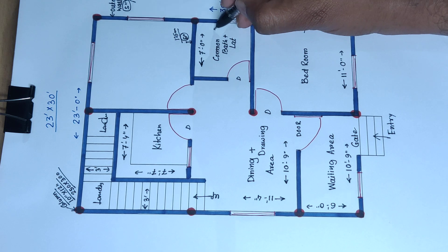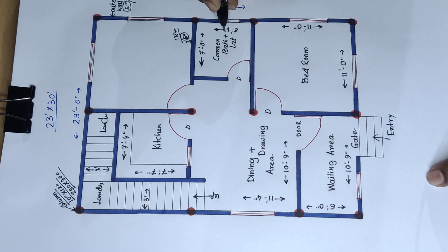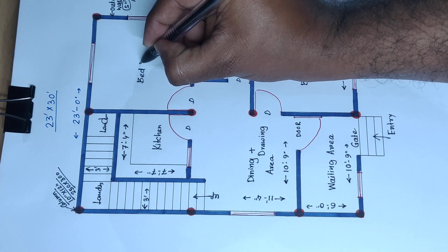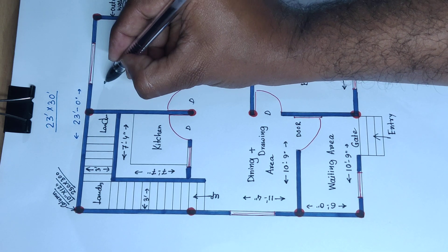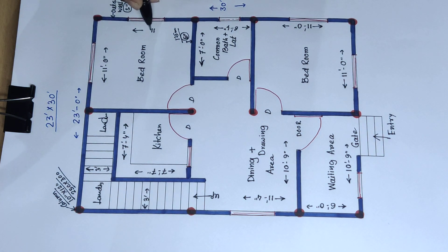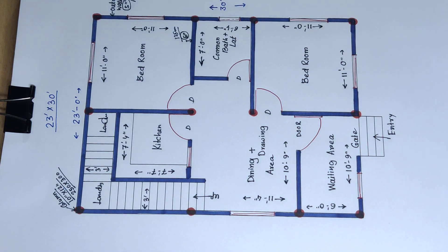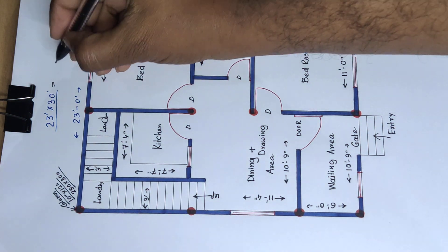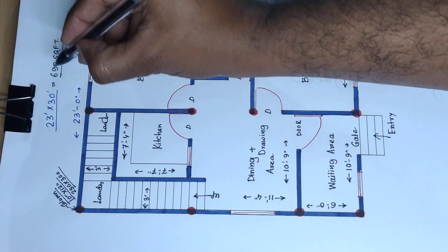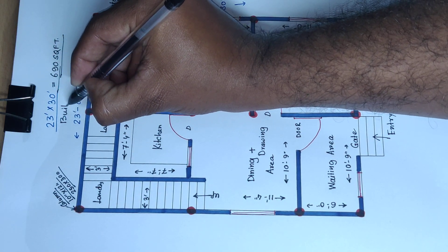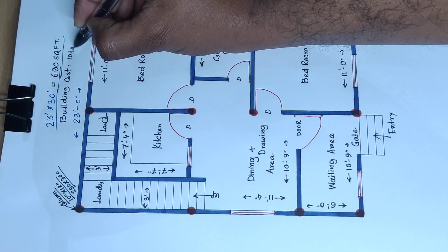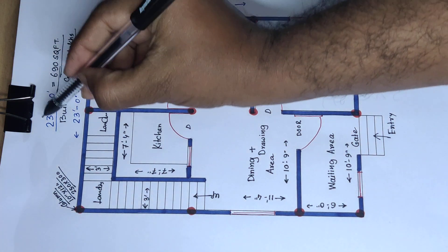6 feet 4 inch and 6 feet 4 inch. And the second bedroom — this side distance is 11 feet 0 inch and this side distance is 11 feet 0 inch, square type. Total area is 690 square feet and building cost is 10 lakhs.